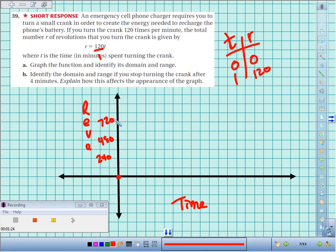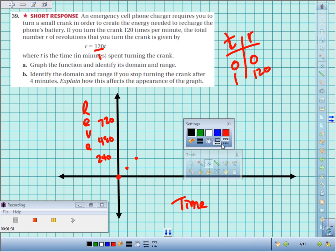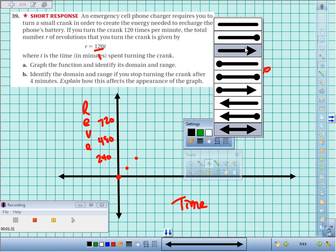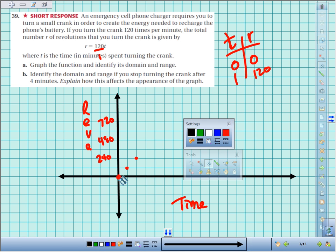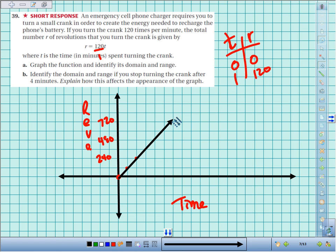Another minute, another 120 revolutions. Another minute, another 120 revolutions. I suppose theoretically I could do this till I was all pooped out. I can't have negatives, so this would be a ray going in the positive direction.